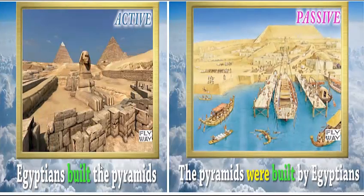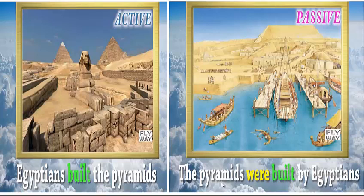More examples: 'Egyptians built the pyramids.' The passive is: 'The pyramids were built by Egyptians.' We start with the object 'the pyramids,' followed by 'were' because 'the pyramids' is plural, then the past participle 'built,' and the subject preceded by 'by.'